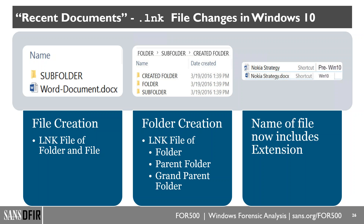In Windows 10 there are significant differences in how shortcut files are created. Previously LNK files just included the base filename, but now they include the full extension — for example, NokiaStrategy.docx.lnk. Also, opening or creating a folder may now create three shortcut files — for the created folder, the folder, and the subfolder — showing the different parent directories.